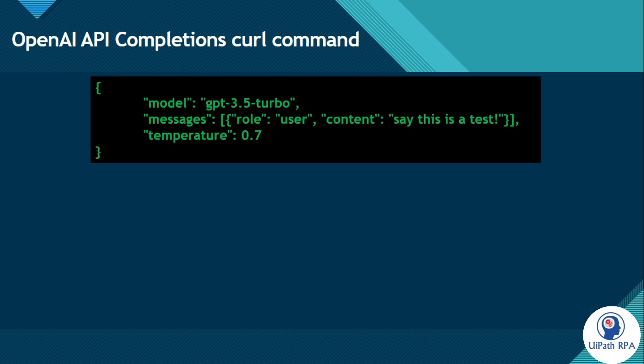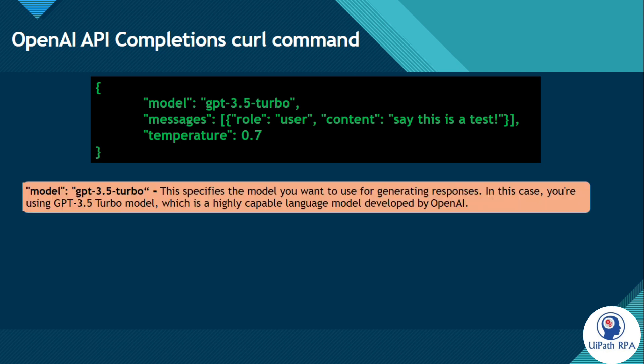Now let me explain this data — model, messages, temperature, role, and content. This is in JSON format. Model is a property and GPT-3.5-Turbo is the value — it's like a key-value pair. This specifies the model you want to use for generating a response. In this case, you are using GPT 3.5 Turbo, which is a highly capable language model developed by OpenAI.